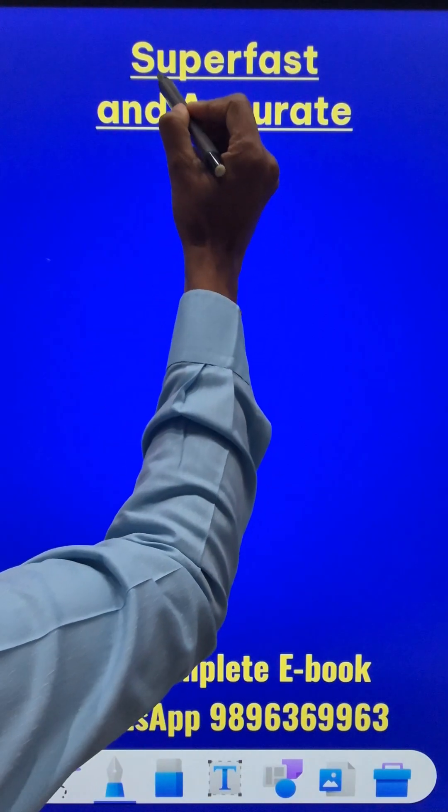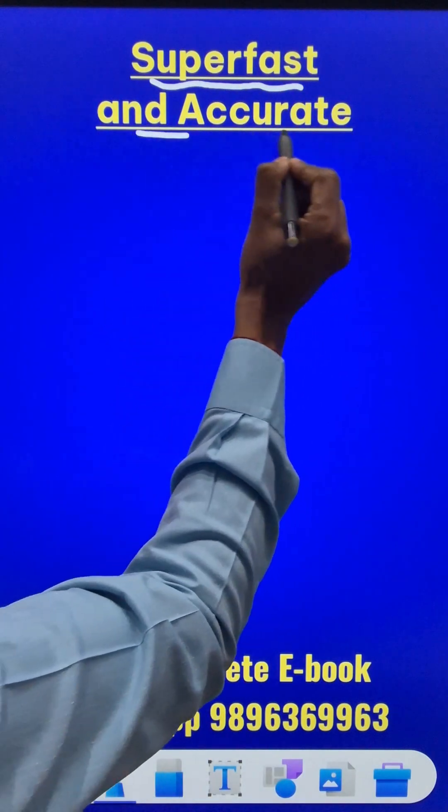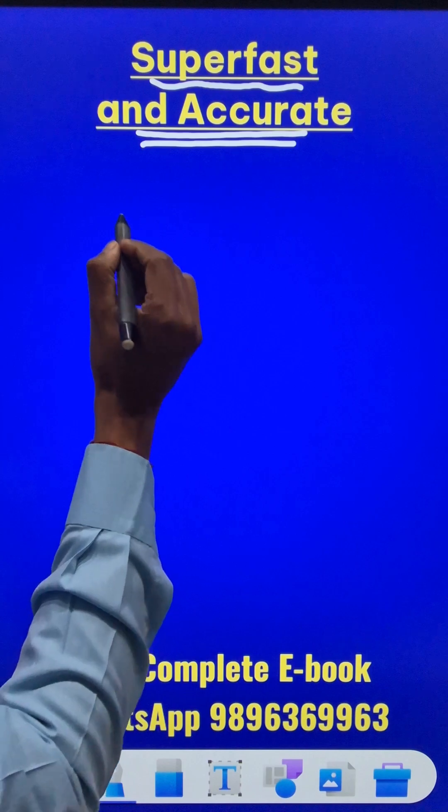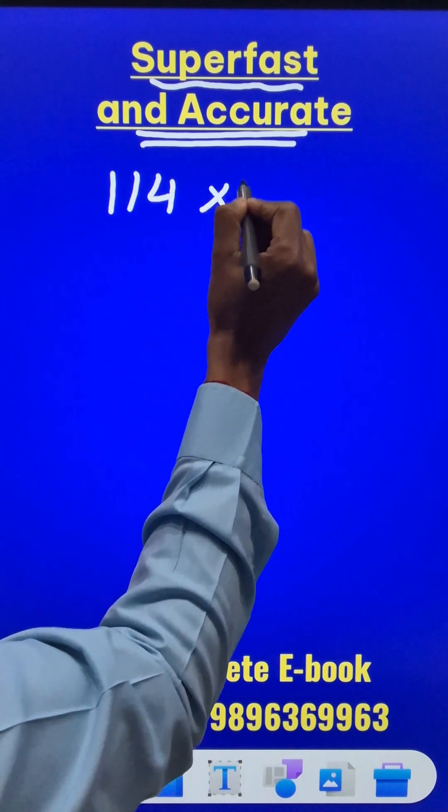Do you know numbers can be multiplied in a super fast method that is very accurate? Suppose you have to do 114 times 116.